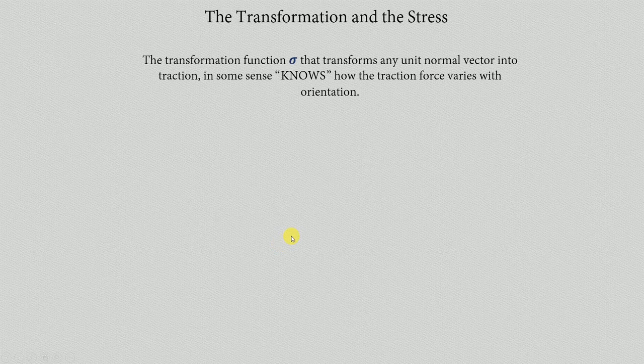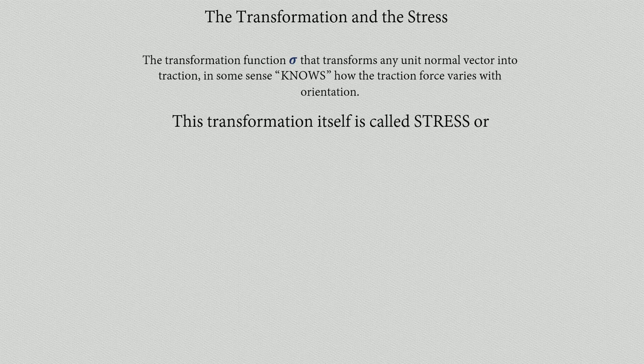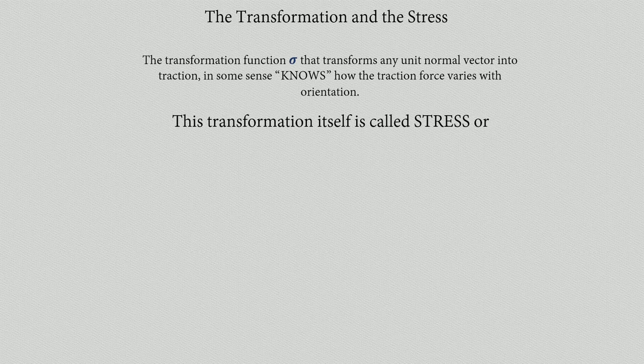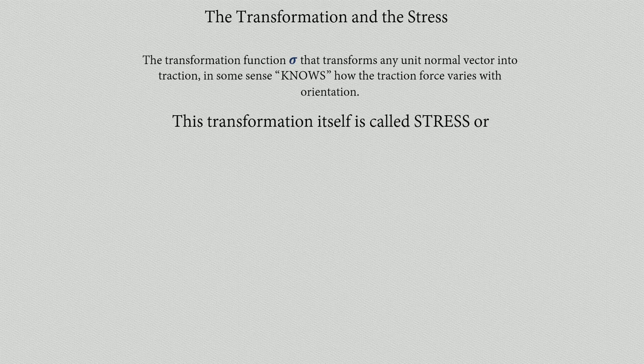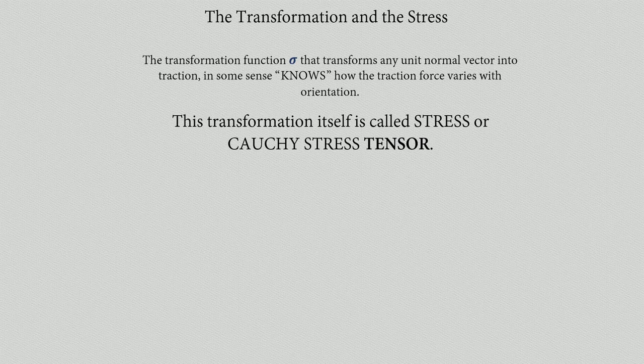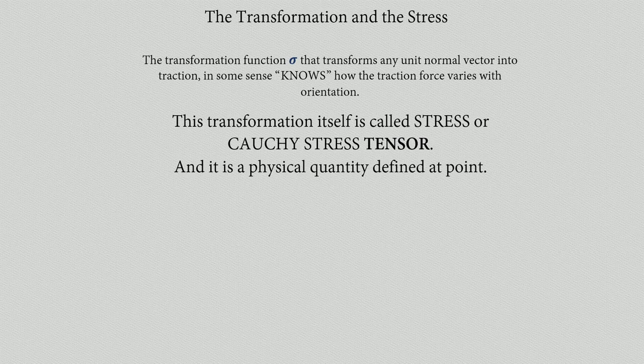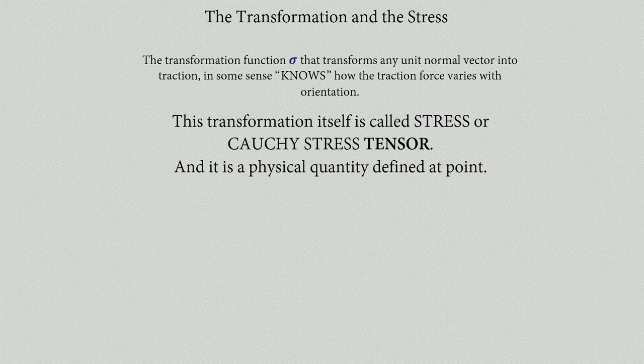So this sigma is actually the stress that we defined in the previous slide. Everything that we introduced—the sigma transformer in the previous slide and what stress is—we now come to the conclusion that both these two things are the same, and we call this stress a Cauchy stress tensor. A new term: tensor. We'll see what a tensor is separately in the next video because it will need some explanation. This stress is a physical quantity defined at a point; it has a lot of information stored in a single three by three matrix.